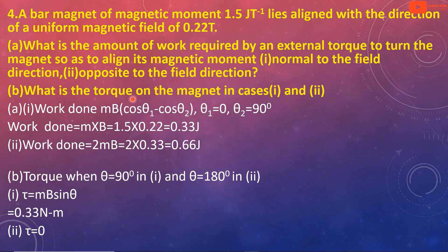Now for the torque: the torque equation is tau equals m cross B, which equals m B sin theta. When aligned normal to the field direction, theta equals 90 degrees, so torque equals m B sin 90 equals m B, which equals 0.33 joule. In the second case, theta equals 180 degrees, giving torque equal to approximately 0.82.